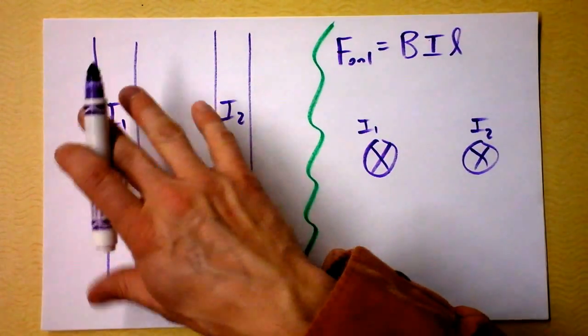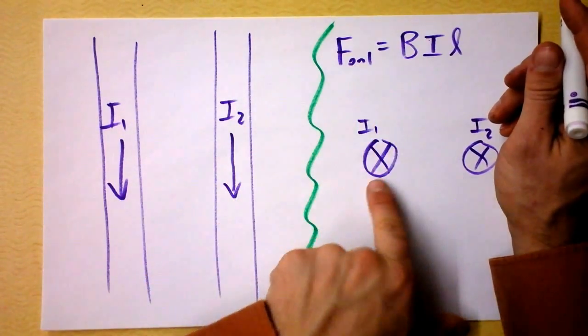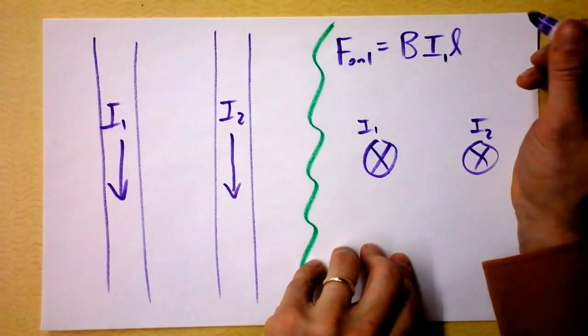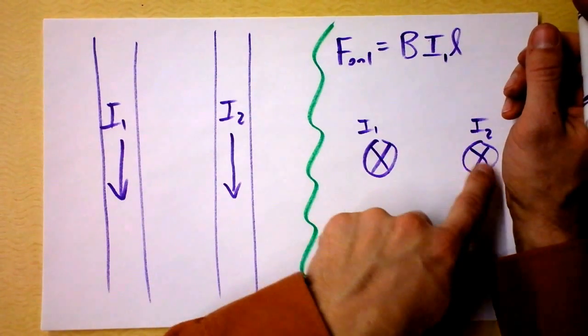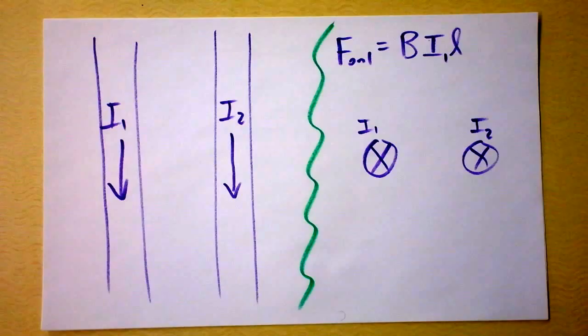Over here we can think about the direction it points. So the force on 1 depends on the current in 1, right? It also depends on the magnetic field created by 2, created by 2, where 1 actually is.